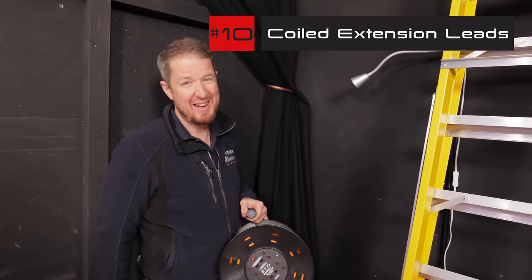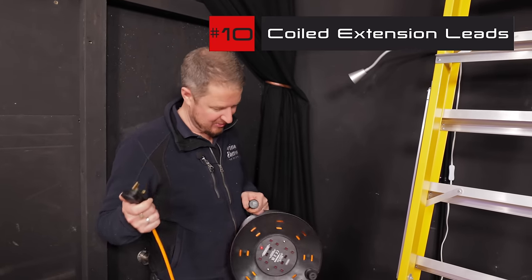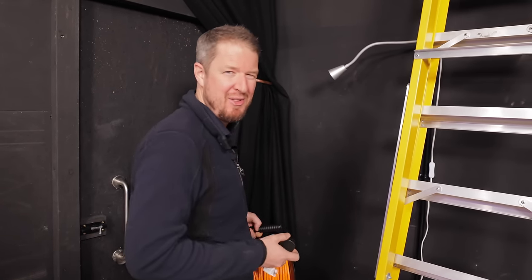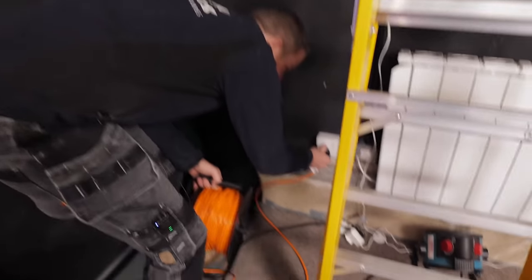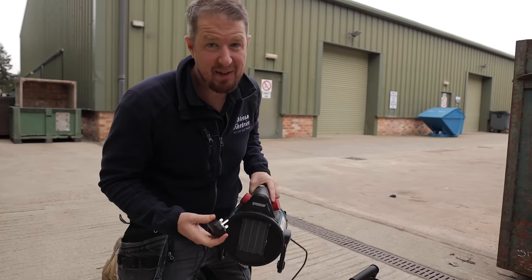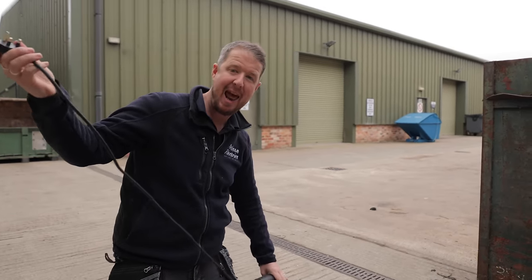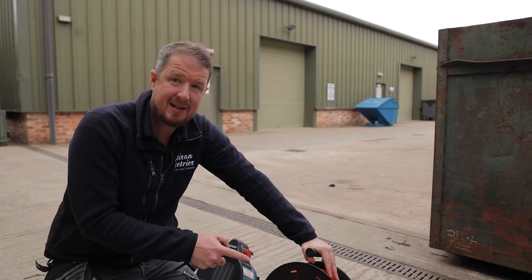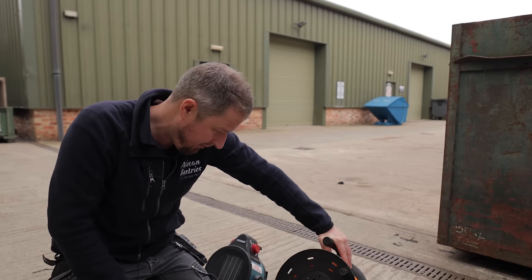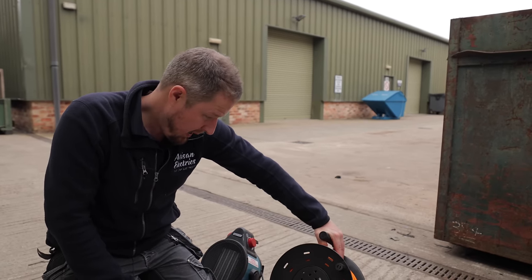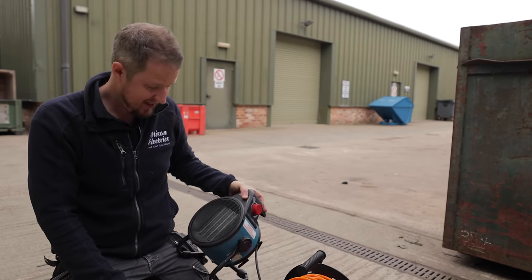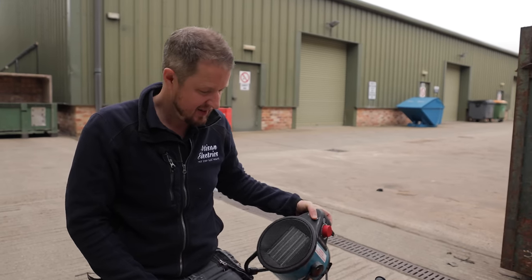And the final and worst DIY mistake with electrics that I've ever seen is this one and it's quite a common one not unwinding the extension lead fully and plugging something in what happens if you do that let's try it now one fact that not a lot of people know is that if you're plugging in anything that uses a lot of power to an extension lead you should uncoil the extension lead fully before plugging in that heavy load so this extension lead here says that we can plug a maximum of four amps fully wound or 13 amps unwound and we're going to plug in this two and a half kilowatt heater which is about 10 amps and see what happens with it fully wound.